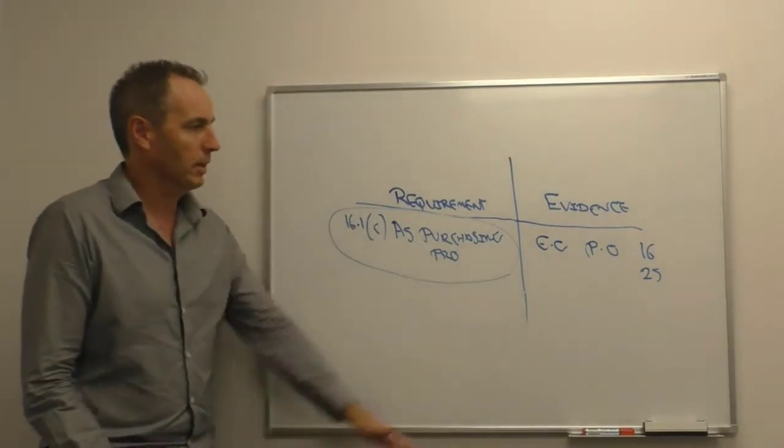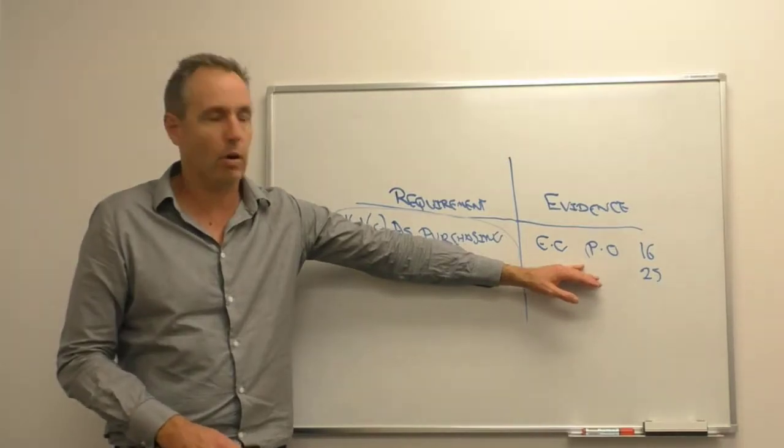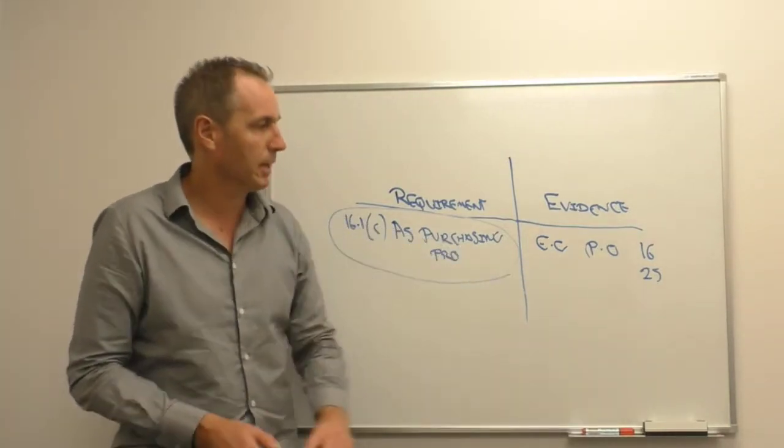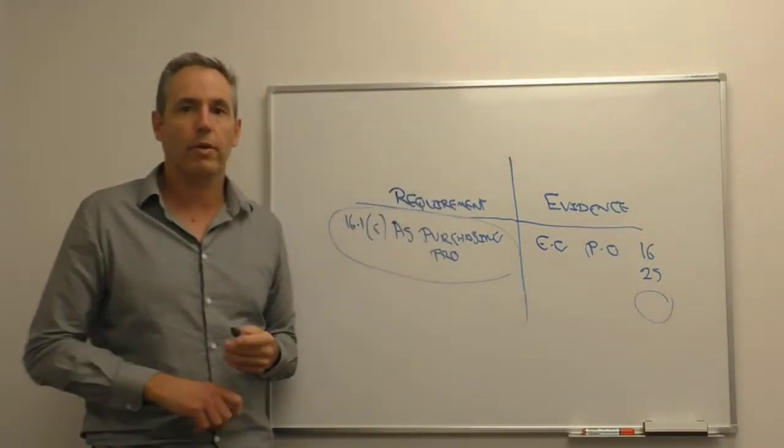What we don't want to say is the evidence is some of your purchase orders. They might have a big drawer or a big electronic folder of hundreds of purchase orders. Again, we don't want them looking through, picking out the wrong purchase order and fixing the wrong thing.